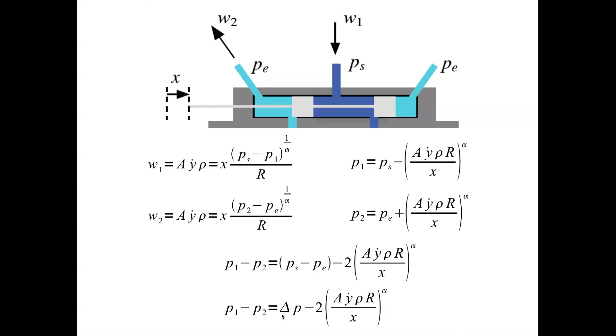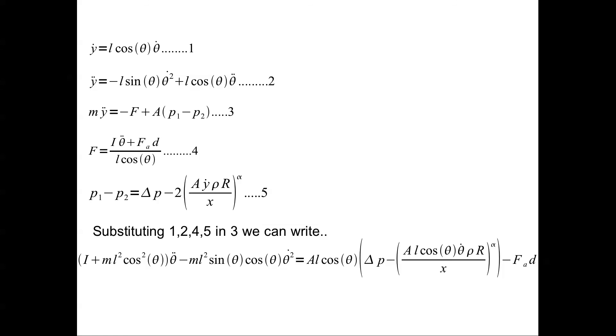Now let's put all the equations together. You have the speed equation for the mass, the power piston. You have the acceleration equation for the power piston. You have the dynamic equation for power piston. You have the equation for force written in terms of the rate of angular acceleration of the spoiler. And then you have a pressure equation. If you put everything together, substitute 1, 2, 4, 5, and 3, we can write this final equation.